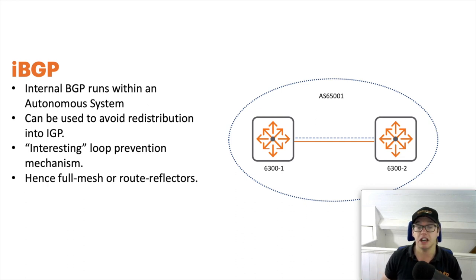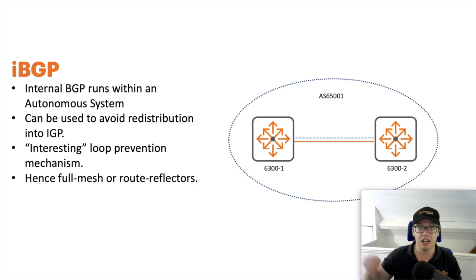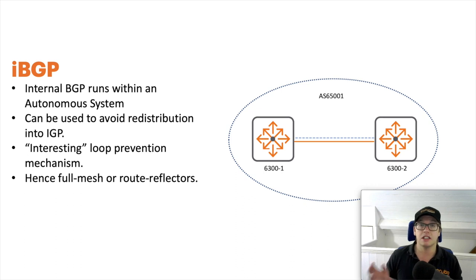Now iBGP has an interesting loop prevention mechanism — this is one of the basics but it's always worth remembering because it informs so much of this flavor of BGP. With eBGP, the loop prevention mechanism is AS path: as the prefix moves between ASes, speakers add the AS number to the AS path, and if they see their AS in a BGP update it's rejected. You can't do that with iBGP because it's all within the same AS. So AS path is essentially useless, and the loop prevention is what the protocol doesn't do: it doesn't forward on iBGP-learned prefixes to iBGP peers.